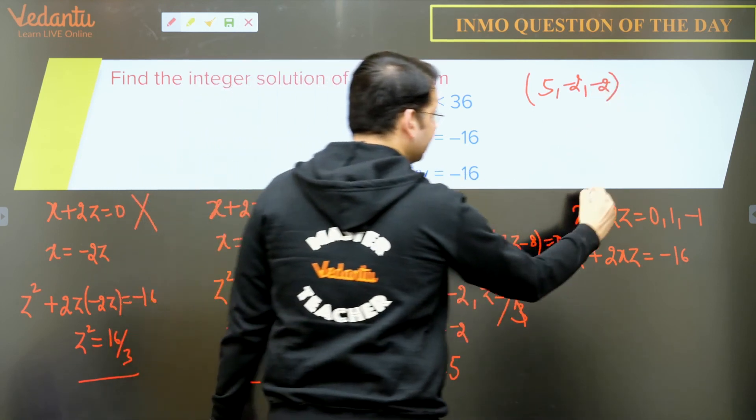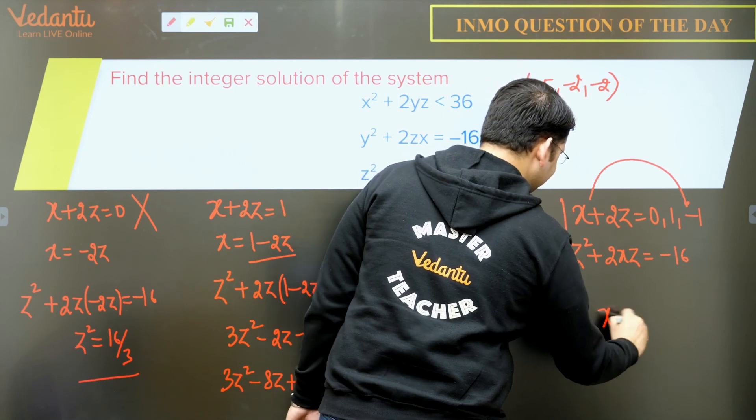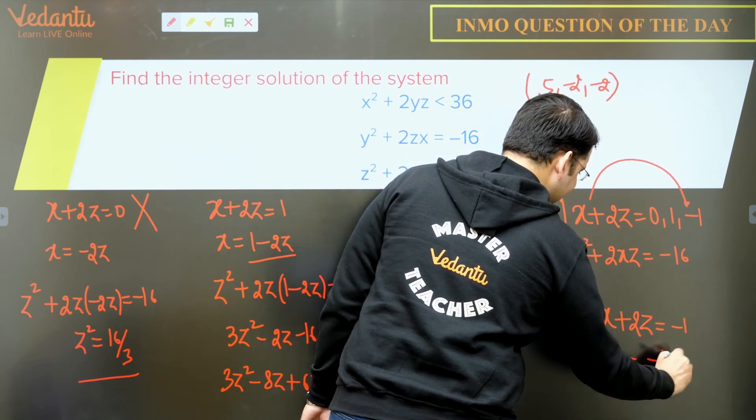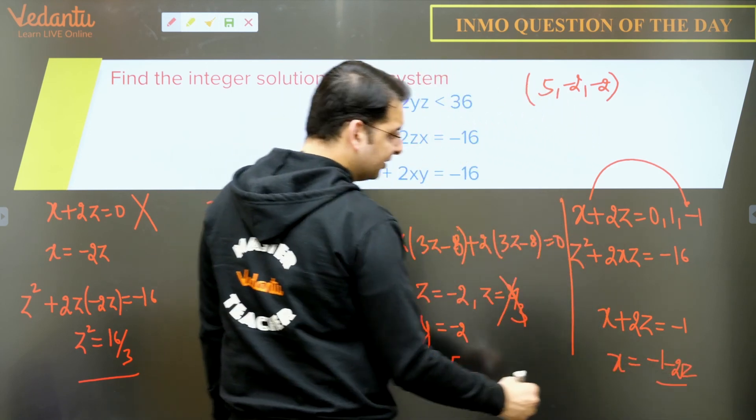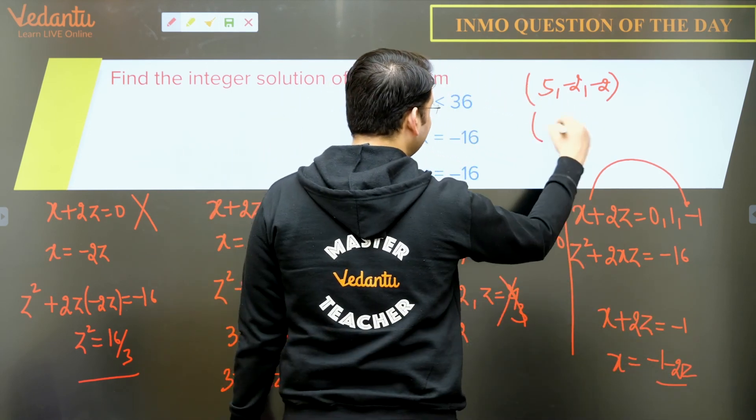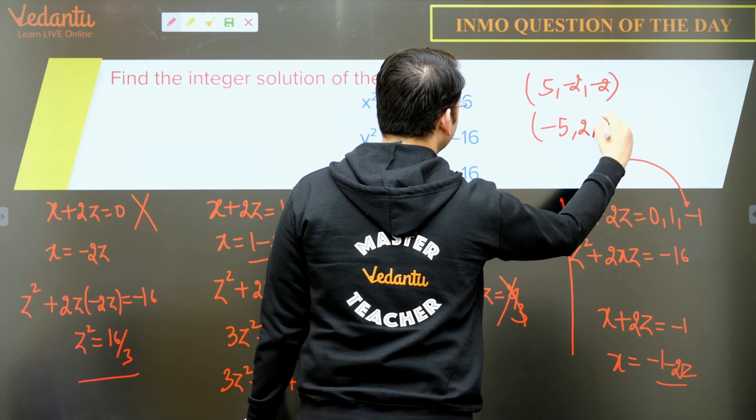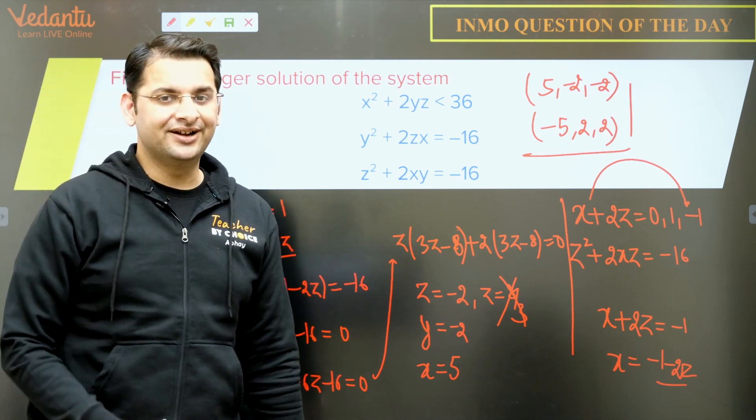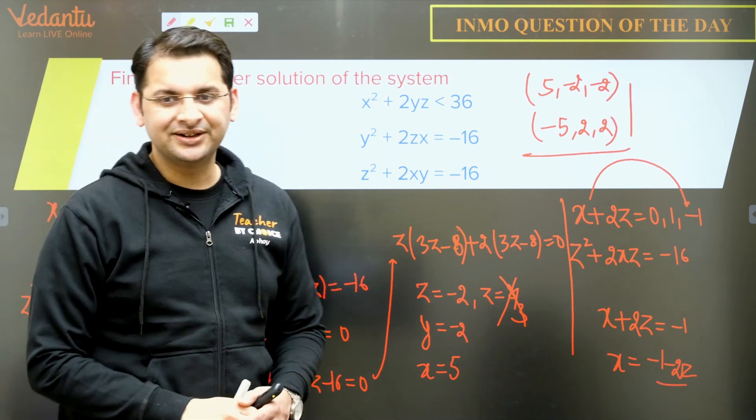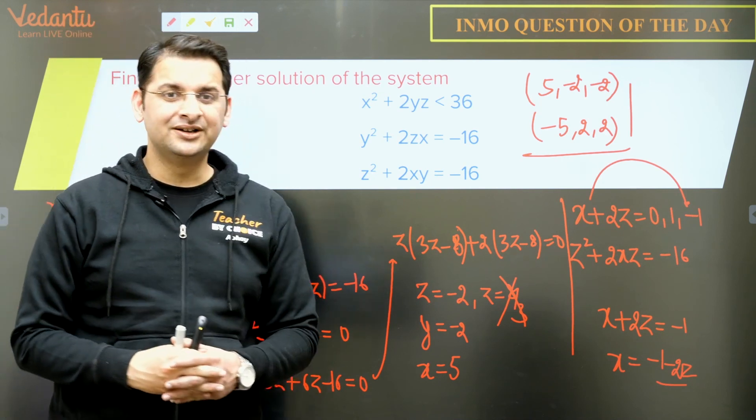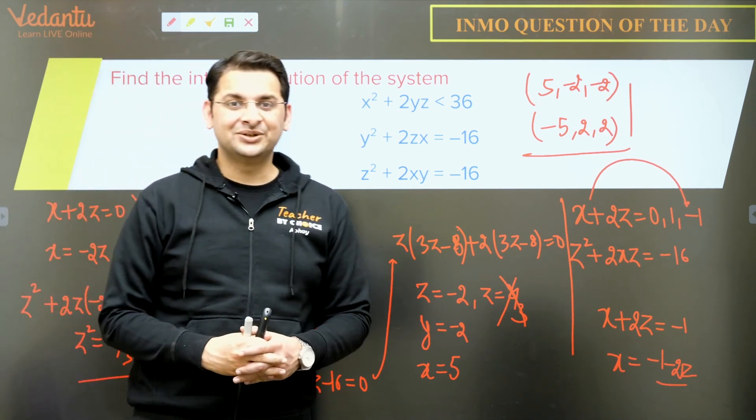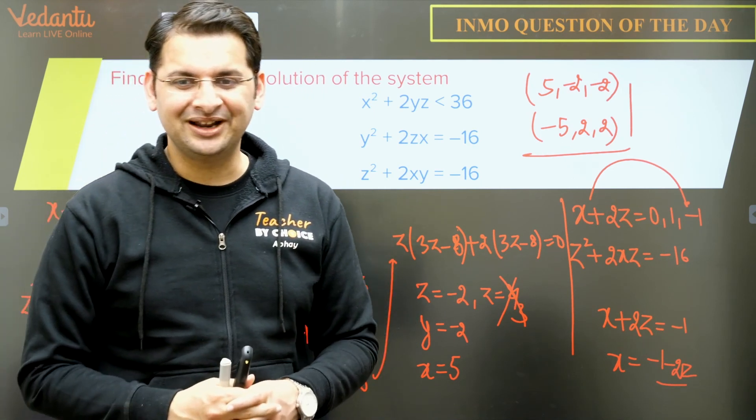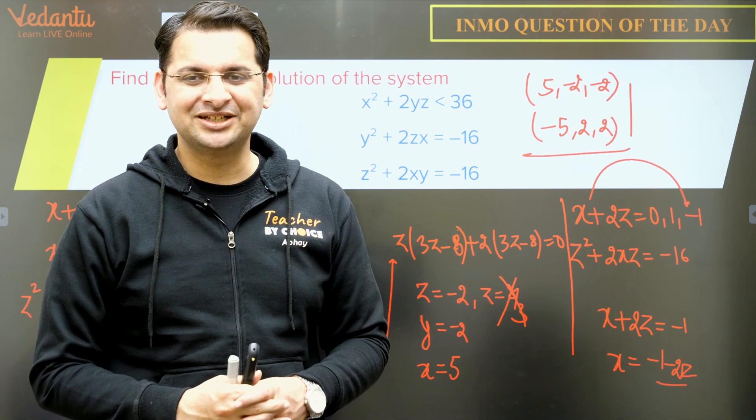And likewise, if we put x + 2z = -1 and x = -1 - 2z, you can calculate this yourself. The solution will come out to be (-5, 2, 2). So these are the two possible solutions to this particular system. I hope you all got this. This was a rather simple question with regards to INMO standards. So this kind of question comes a lot, but it is possible and we need to be ready for every possibility. I hope you have enjoyed the solution. Take care.